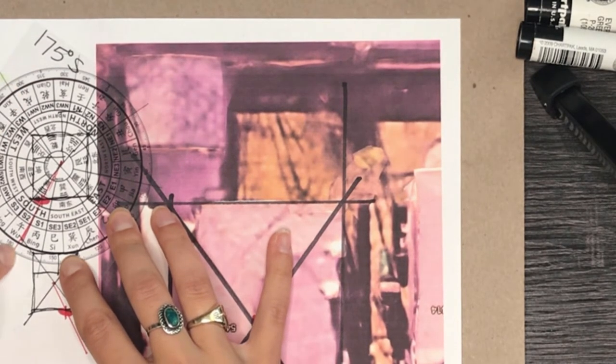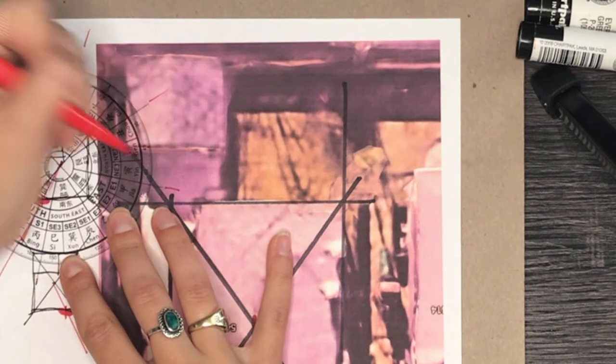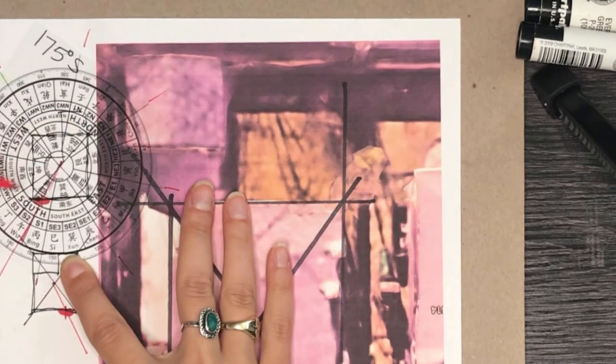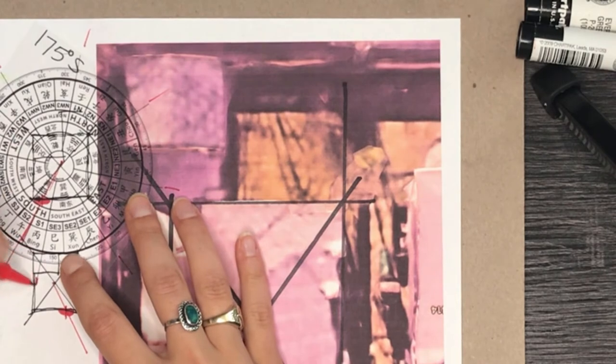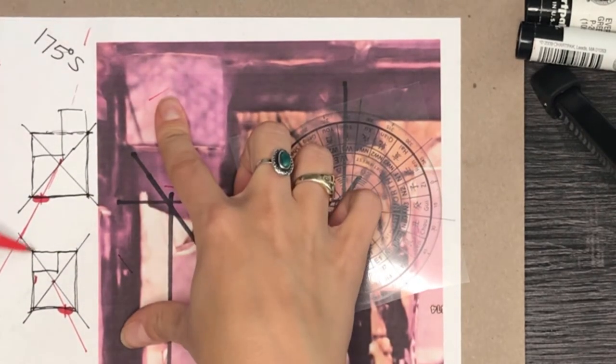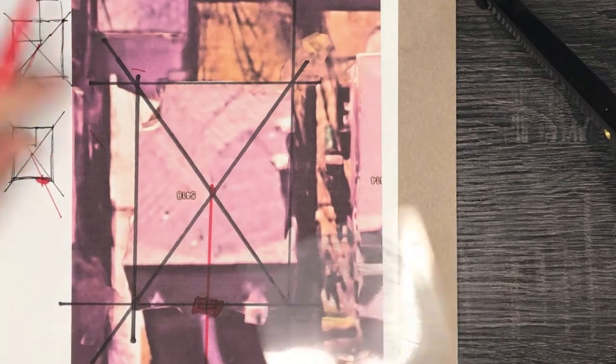And then we need south. So south comes here and here. These are going to be hard to show on the little ones. But then that's how you know where your south, north, east. Let's just show you on the big one and not confuse you anymore.